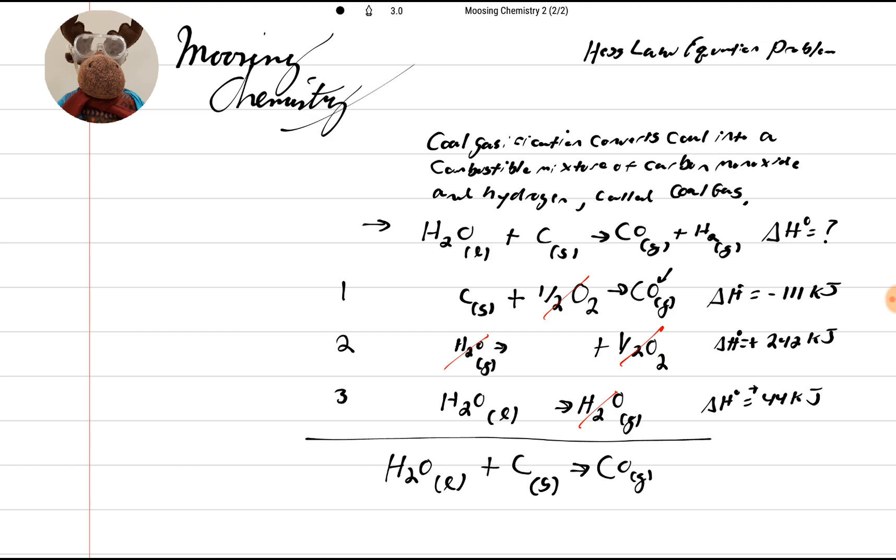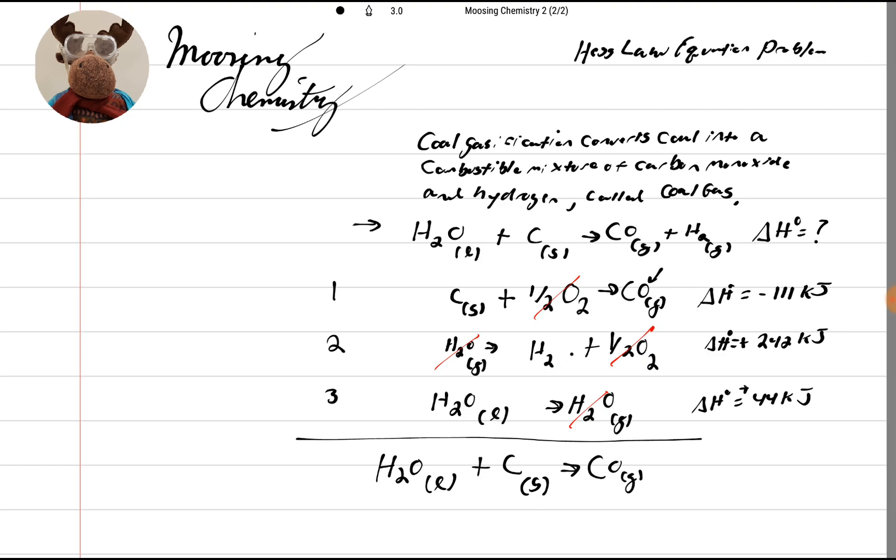Wait, that hydrogen actually stays there. Sorry about that. So now that gives us CO plus our hydrogen gas. Now, here's the cool thing. Now we have to add all our changes up. And we add all our changes up, our delta H value is going to equal a positive 175 kilojoules.